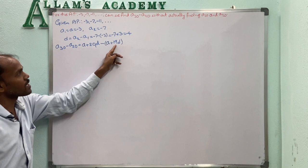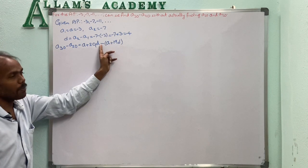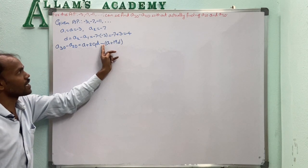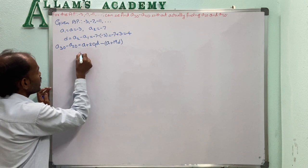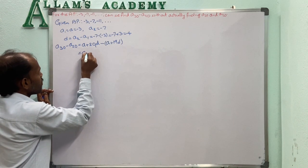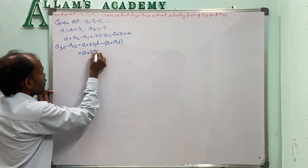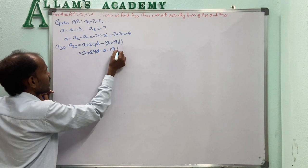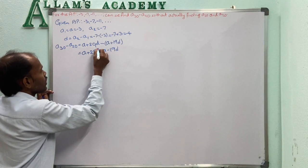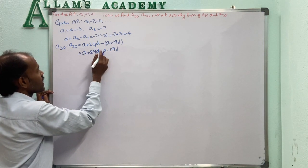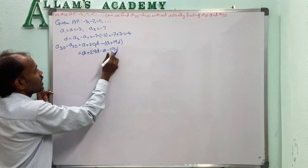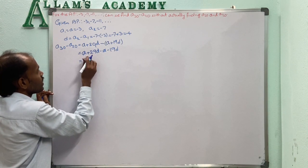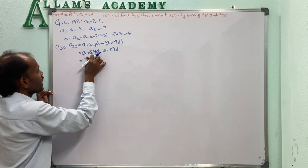Expanding: A + 29D minus A minus 19D. A minus A gets cancelled. 29D minus 19D equals 10D.